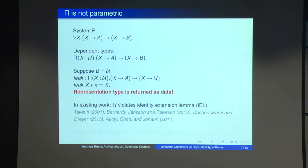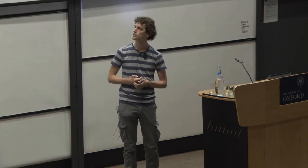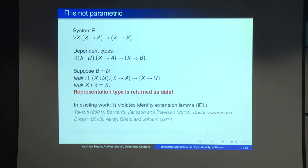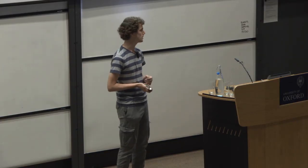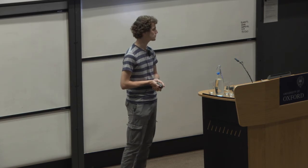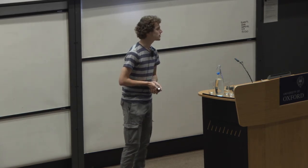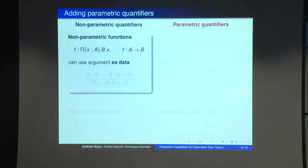So if you look at the existing work so I have the proof before and now I have a counter example how does that how can we reconcile that simply because in related work in existing work on parametricity in dependent type theory the universe just doesn't satisfy this identity extension lemma that we relied on. And so what our solution or the syntax side of our solution is to keep track of how we use variables to make sure that we can only prove parametricity theorems when they actually hold.